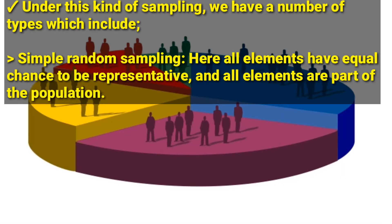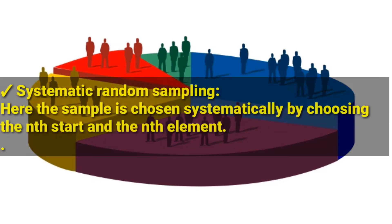Under probability sampling, the first type is called simple random sampling. Here all elements have an equal chance to be representative and all elements are part of the population. An example would be choosing a random group of 10 students from a class — choosing randomly means you can choose anyone, so all elements have an equal chance to be chosen.